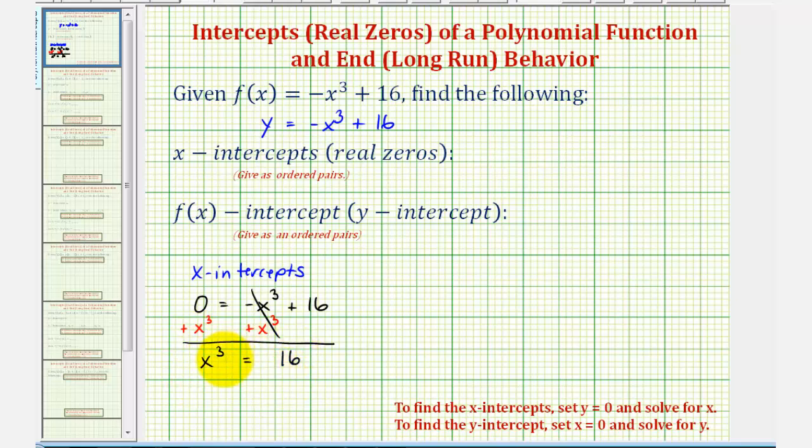And now to solve for x, to undo the cubing, we'll now cube root both sides of the equation. The cube root of x cubed would just be x, so we have x equals the cube root of 16, but this will simplify.